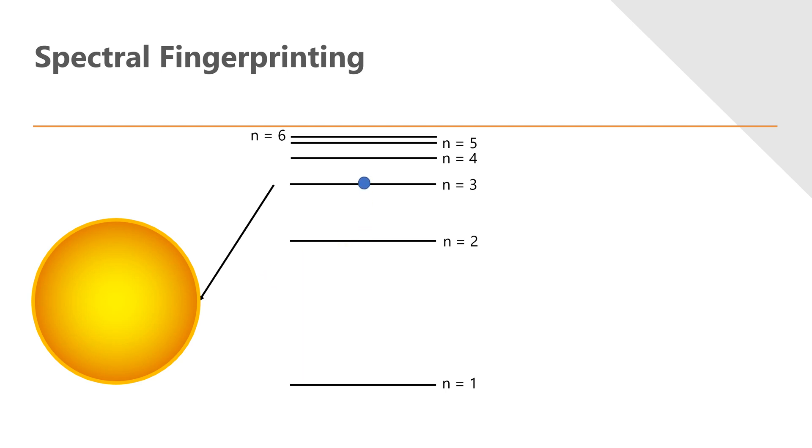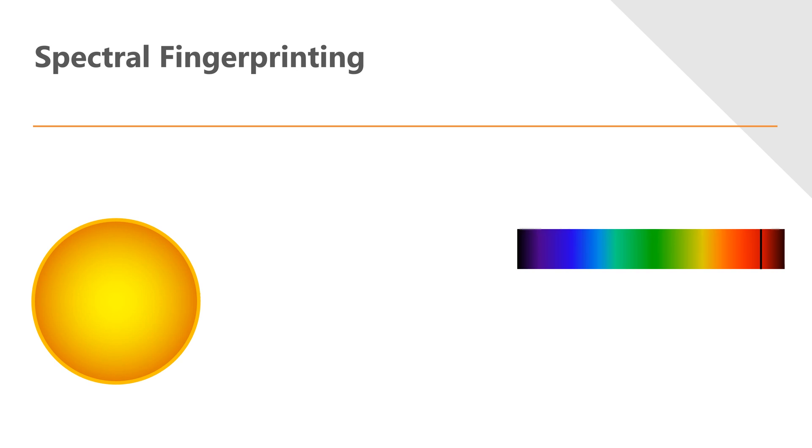As certain wavelengths of light are absorbed by that electron, it can gain energy. And when it encounters a photon that has just the right energy for that energy level difference, it will be excited. Now because it's absorbed that energy, we get a distinctive dark line on our continuous spectrum.